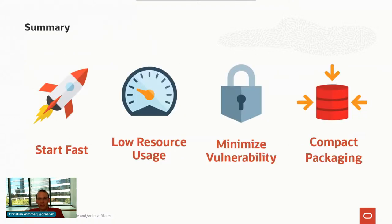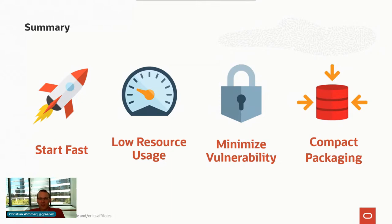In summary, what native image gives you is a native binary out of your Java application that starts fast, has low resource usage, minimizes security vulnerabilities, and enables compact packaging. It is very easy to use by now because of all the microservice frameworks — all the great work the Spring people did to integrate native image in the build system. The only thing is you still need to be a little bit aware when you have reflection that you need to configure some things manually at build time. That gets you a native image that hopefully helps reduce your cloud footprint and your costs, because you can run in smaller containers with lower resource usage.